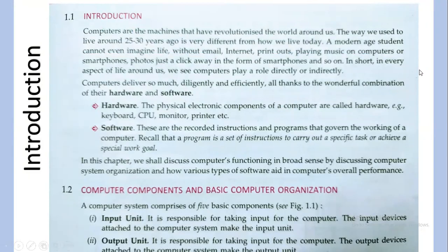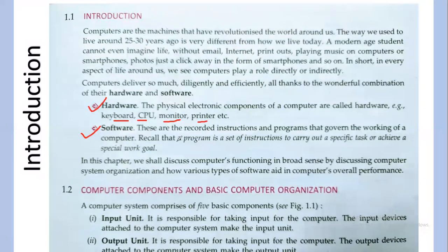First of all, we'll be talking about hardware and software. Hardware is basically the tangible object which can be touched and felt — for example, keyboard, CPU, monitor, and printer. Software is intangible; you can only feel that something is working internally. For example, when you press a button on your device and the device works, something is working internally taking your inputs and working accordingly.